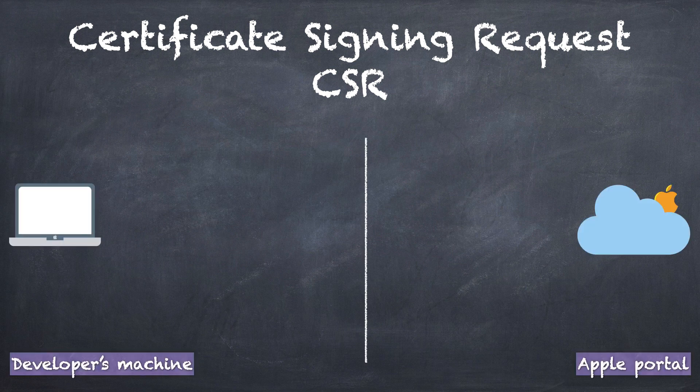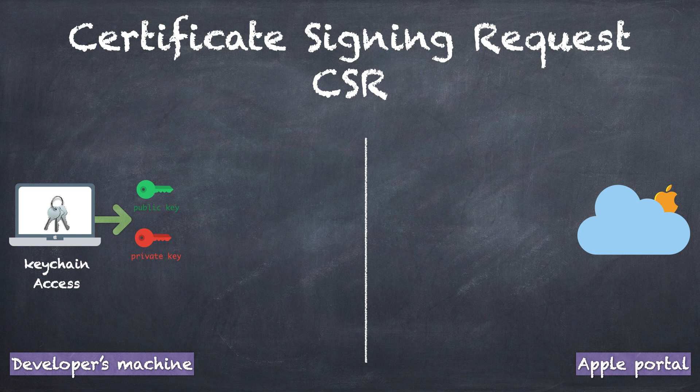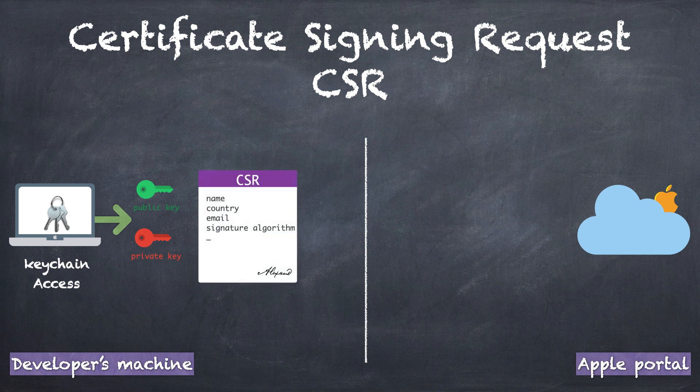This uses public key infrastructure policies to create, manage, and distribute the digital certificate. The process of creating a CSR is very standard in the PKI. The applicant has to generate the public key and private key on the local machine. The applicant then attaches the public key with the CSR, along with details like email and country. The applicant keeps the private key secret.